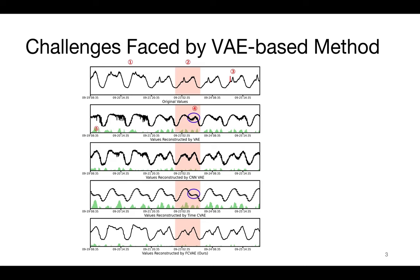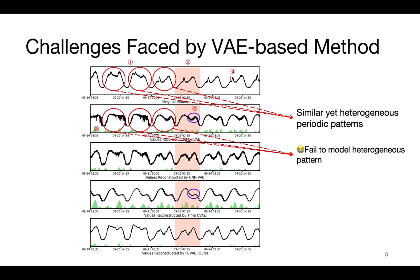We gave a comparison of some reconstruction methods, including ours in the left picture. The green-shaded error represents reconstruction error. Firstly, current methods encounter difficulties in capturing similar yet heterogeneous periodic patterns. In the provided example, each peak and valley exhibits similarity but also has distinct characteristics. However, these methods tend to reconstruct all peaks and valleys into similar patterns.